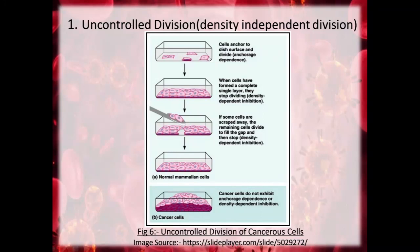In this diagram we can see the differentiation between the normal mammalian cell and the cancerous cell. In the normal cell, a few cells initially placed on a dish slowly divide to complete only a single layer and then stop dividing — that is density dependent inhibition. After forming a single layer, cell division stops. But cancer cells do not exhibit anchorage dependence or density dependent inhibition. They keep growing, making multiple layers on top of one another, thereby forming a large tumour.